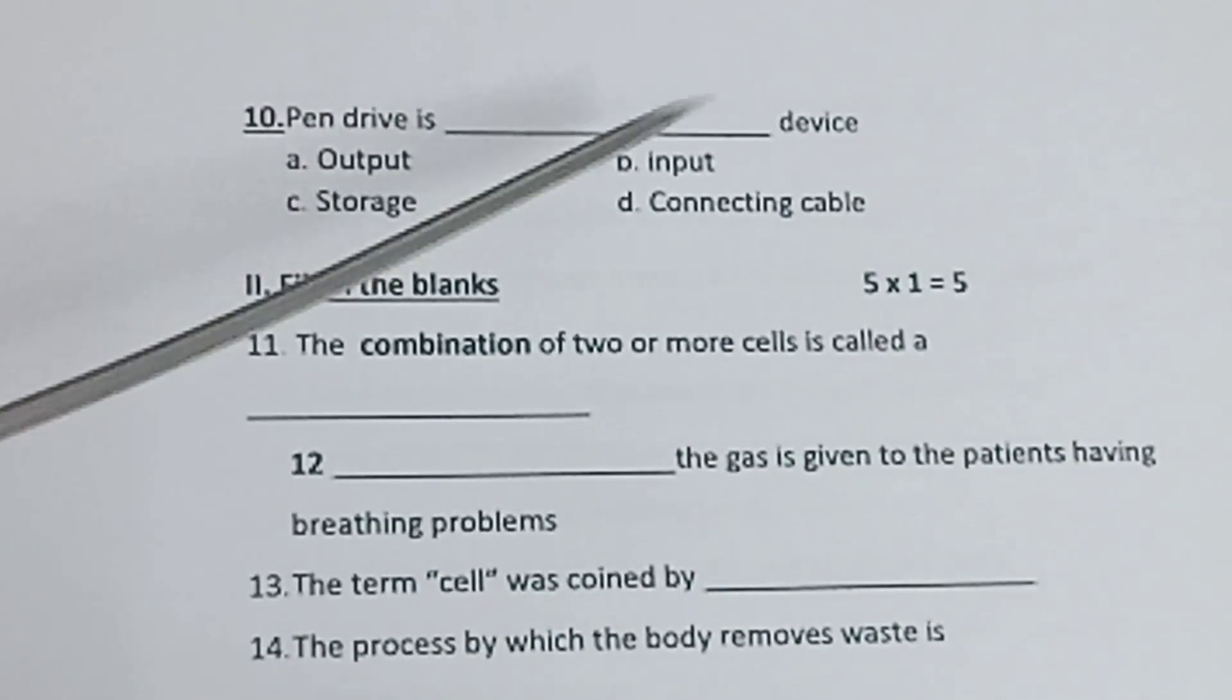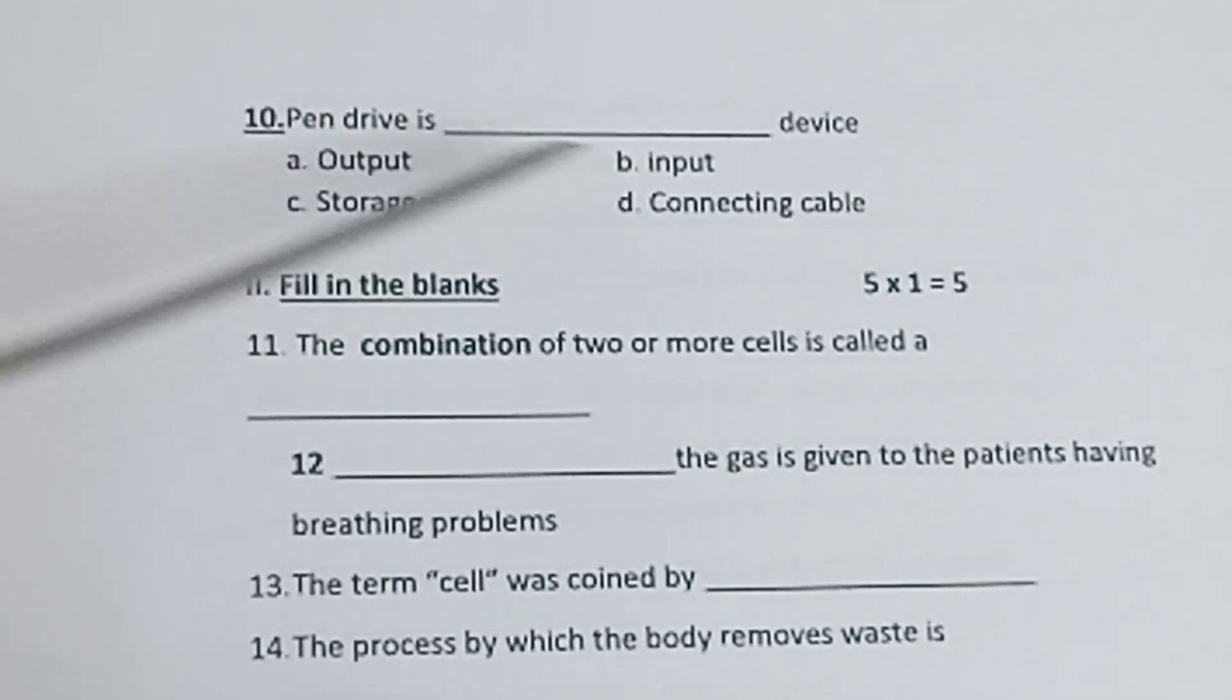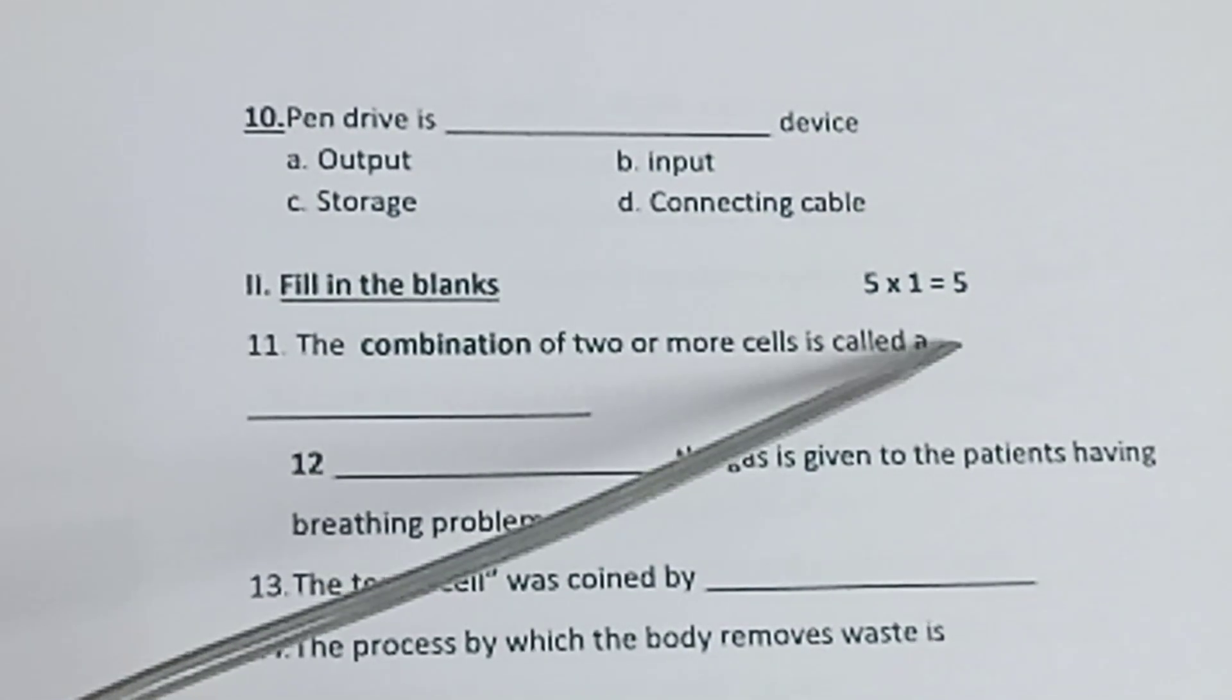Tenth one: Pen drive is - a) output, b) input, c) storage, d) connecting cable device. Section 2: Fill in the blanks, 5 into 1 is equal to 5.